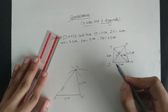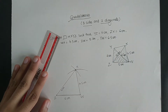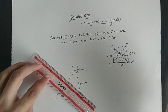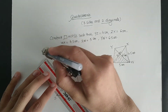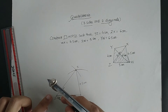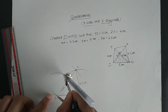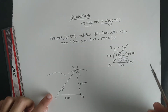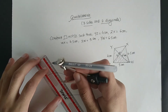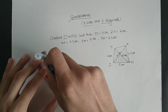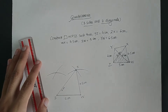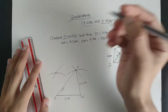Similarly, I will draw triangle YZW. For that, YZ is 4 centimetre, so I will mark 4 centimetre in the compass and draw an arc from point Z. Then I will take the distance of YW which is 6.5 centimetre in the compass and draw another arc from point W. The intersection of these two arcs gives me point Y.